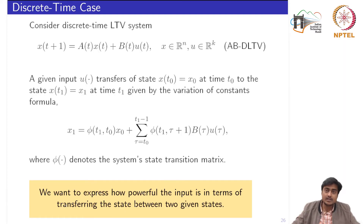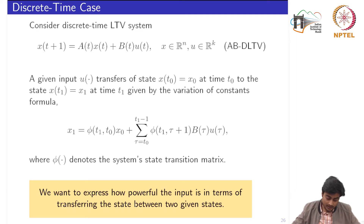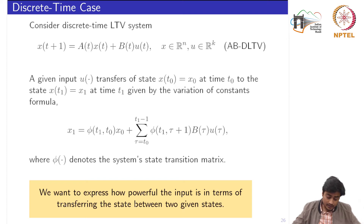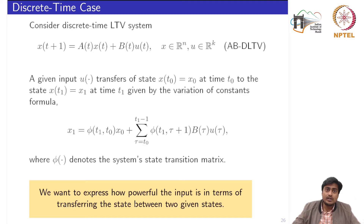Moving forward into the controllable and reachable subspaces sections, we have discussed LTI systems and continuous time, linear time varying, and linear time invariant systems. One important conclusion we reached is that for continuous time systems the controllable subspaces and reachable subspaces basically coincide. The natural question arises whether they also coincide for the discrete time scenario, so today we will start with the discrete time systems.